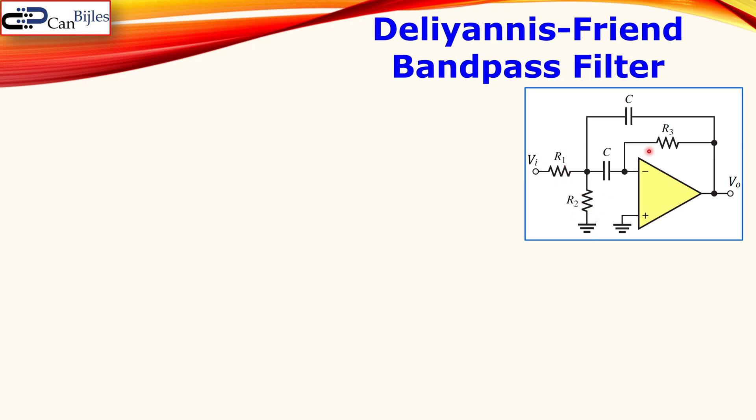We have three resistors, two capacitors. Each of them are equal in this case. And we have here the inverting configuration for our filter circuit.